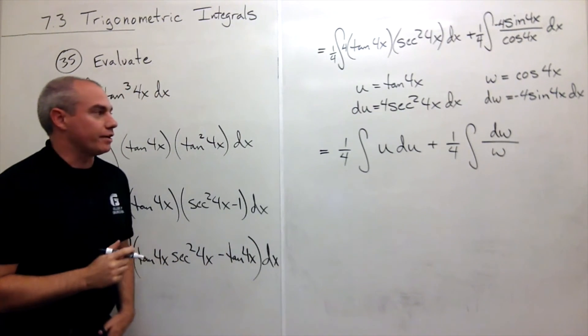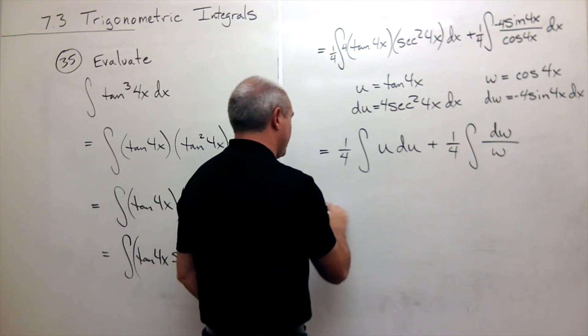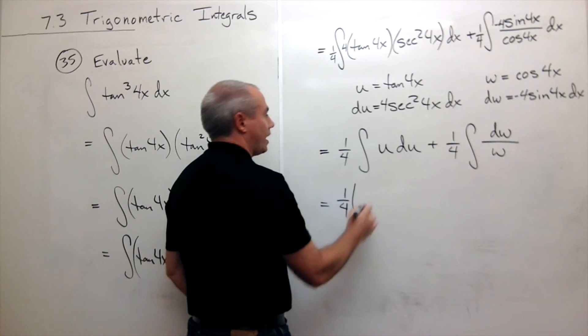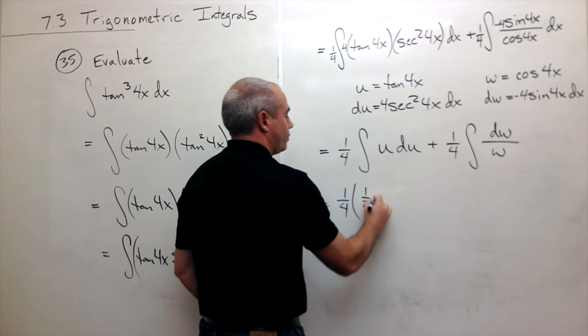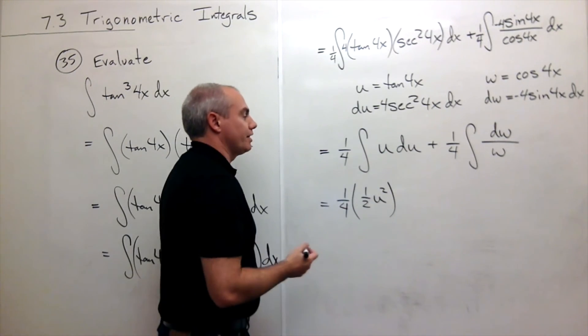So here is what I still need to take an antiderivative of. The first antiderivative is fairly easy. I get 1 fourth times 1 half u squared and plus c. I'll just add on at the end.